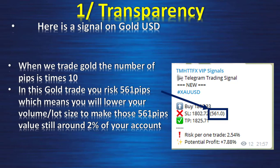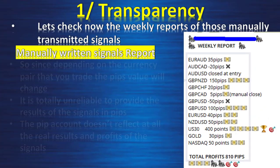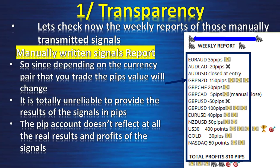Now take gold USD. When trading gold, the number of pips is 10 times the value of silver USD. In this gold trade you risk 561 pips, so you must lower your volume lot size to keep those 561 pips still around 2% of your account. If you place 0.10 lot with a 20-pip stop loss on silver, you'd need to divide by 20 for gold's 561-pip stop loss, giving 0.005 lot — or 0.01 lot minimum. So the pip value per lot differs dramatically, making pip-based reporting totally unreliable as a measure of real profit.